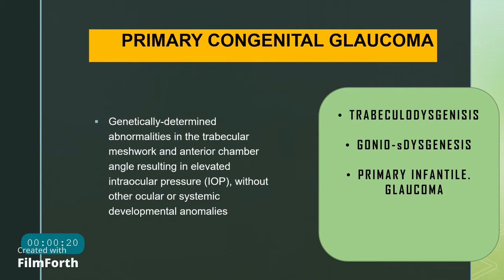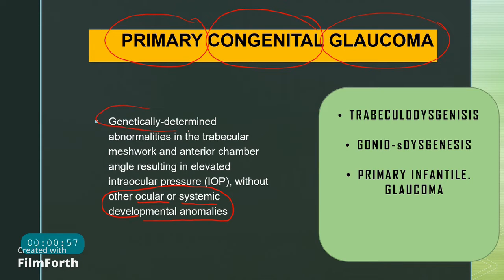Primary congenital glaucoma, as the name suggests, is a primary condition — meaning the problem is in the trabecular meshwork and the anterior chamber angle, with no other ocular or systemic developmental anomalies. It is congenital because it is seen in kids and can present at birth. It is a genetically determined abnormality in the trabecular meshwork or anterior chamber angle which leads to increased intraocular pressure.